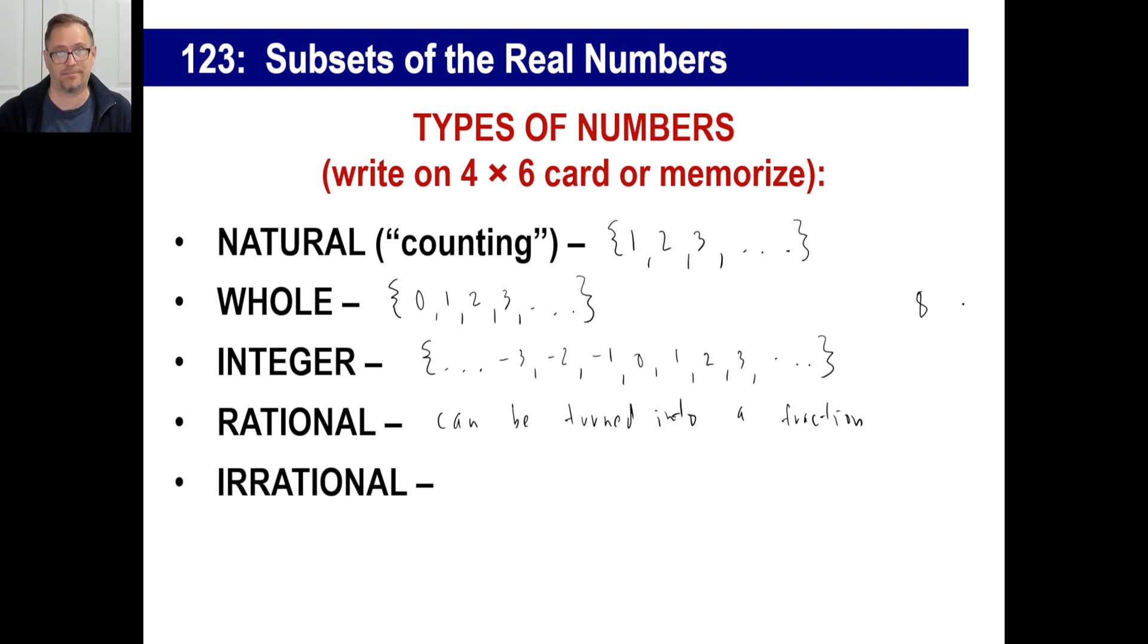Irrational, obviously, cannot be turned into a fraction. Now, let me, you should know this. Just write this down. There are two main types of irrational numbers. The first type is pi. That is a famous irrational number that cannot be made into a fraction. The second type of irrational number is a square root of some number that doesn't give you an integer for an answer. Wouldn't be the square root of nine because that's three. But the square root of ten or the square root of five or the square root of thirty-seven, those are irrational numbers.